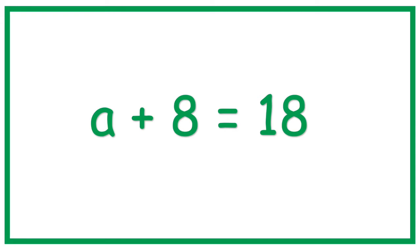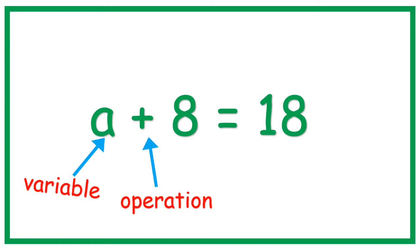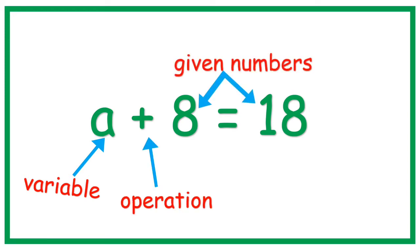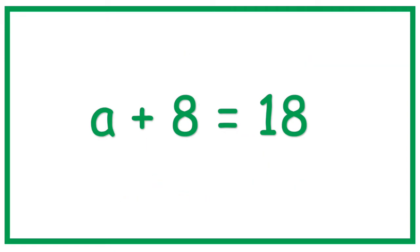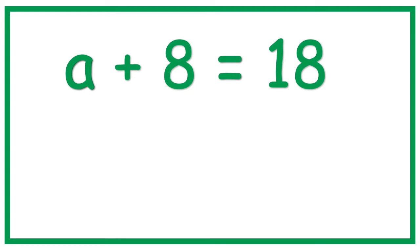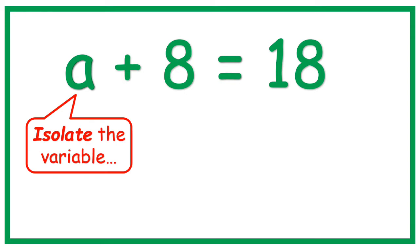A plus 8 equals 18. So we have here the variable, the operation, given numbers, and the equal sign. Let's try to solve this. A plus 8 equals 18. First, we need to isolate the variable.